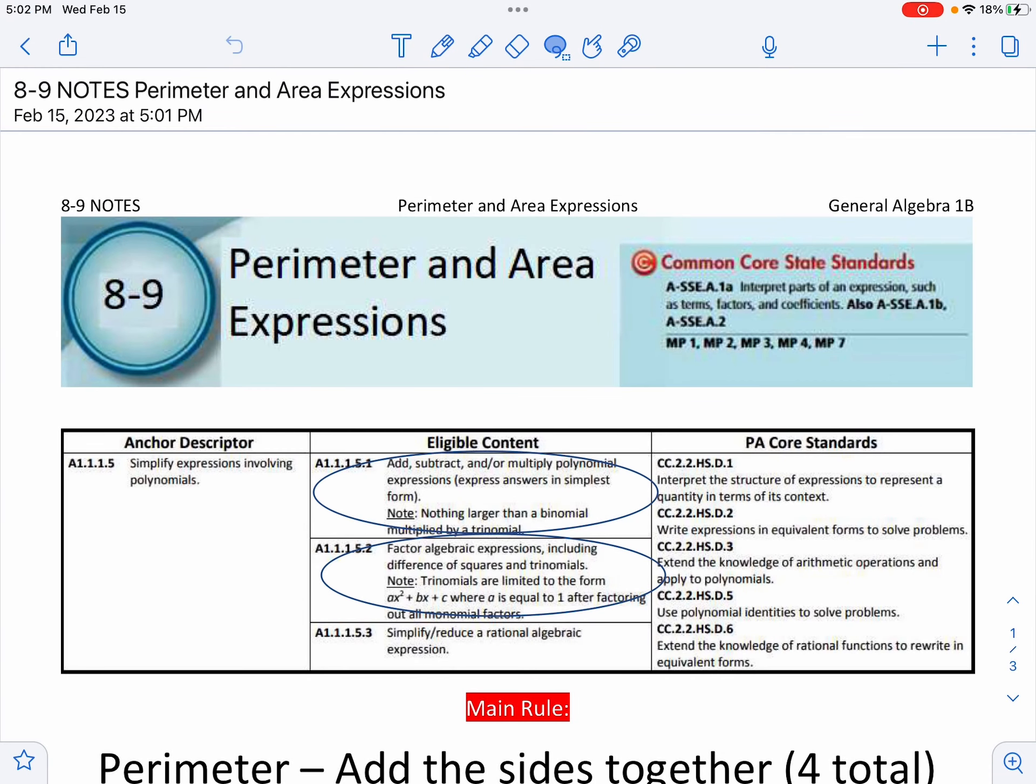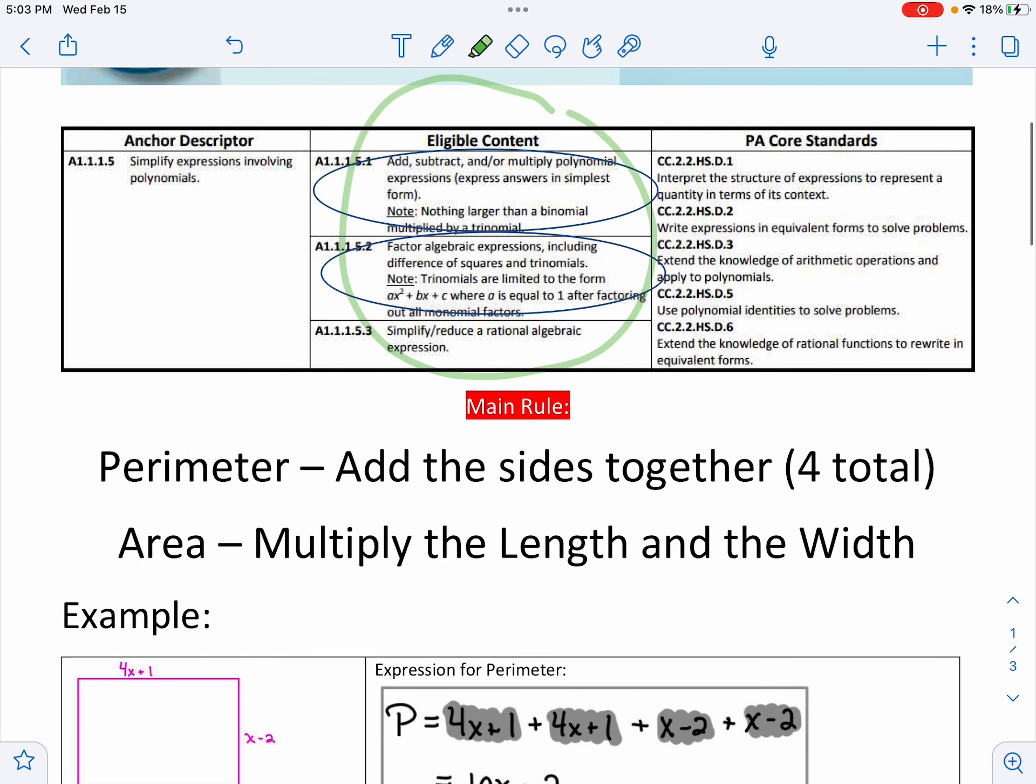Hey everybody, we're on 8-9. Now 8-9 is not a real section in your book. 8-9 is the application problems to the factoring and adding and subtracting. So we did more of the math basics and now we're going to apply those basics: adding, subtracting, and multiplying polynomials together. We're still in the exact same eligible content for your keystones. It would really just kind of be stupid of me not to go over this.